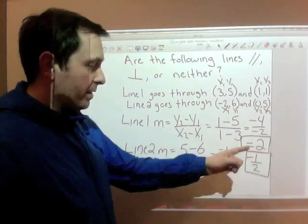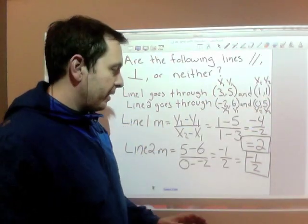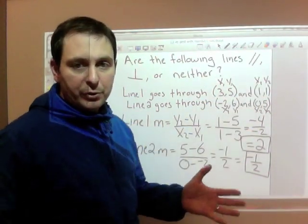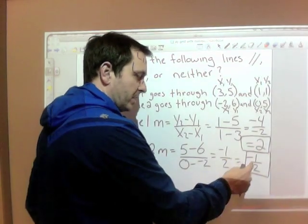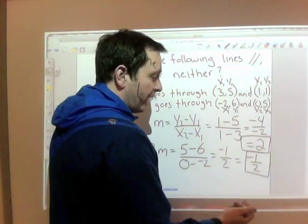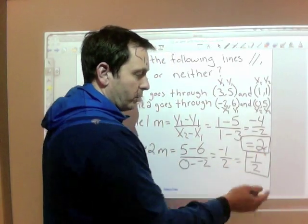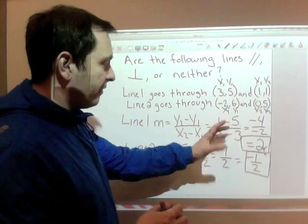So my slopes, they're not the same, so not parallel. They're perpendicular if they are negative reciprocals. Well, one's positive, one's negative, so we got the negative part. Are they reciprocals? They are, because two is two over one, this one is one over two. So because they're negative reciprocals, we've proven that these are perpendicular, the two lines that are made up through these points.